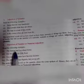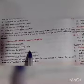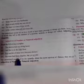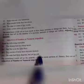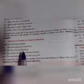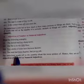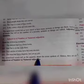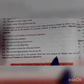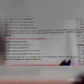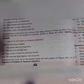Adjective of number or numerical adjective. Read the following examples: 'The demon had two sharp horns.' 'Our flat is on the fifth floor.' 'Two uncles of mine have become doctors.' 'The man had three degrees, but yet no job.' So here two, fifth, two, three, no — these underlined words tell us the quantity about the noun spoken of. Hence, they are called adjective of number or numerical adjective.